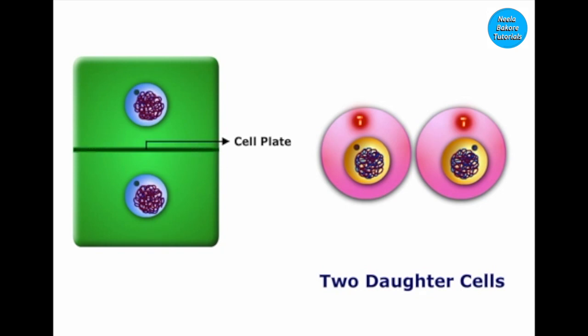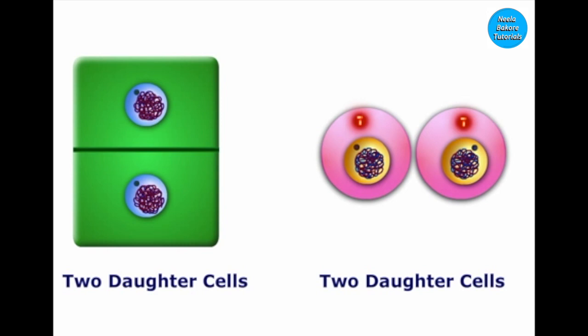As a result of mitosis, one parent cell divides into two daughter cells. The daughter cells are identical to the parent cell and have the same number of chromosomes. Therefore, mitosis is also known as equational division.